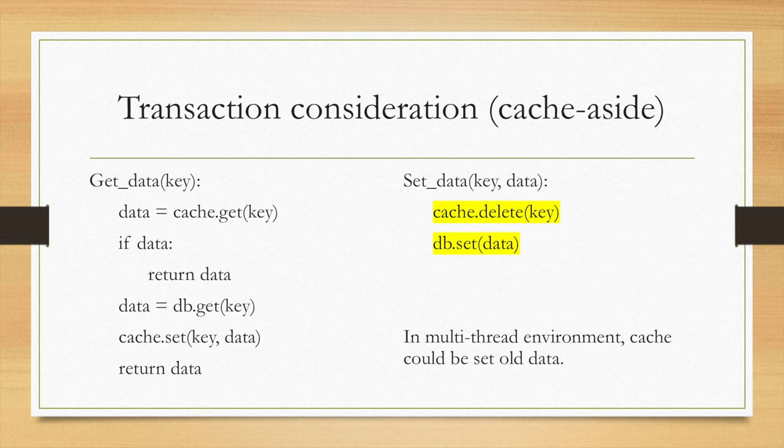For this solution, if in a multi-thread environment, cache could be set to old data. The first thread will call the set and the cache is deleted. And then another thread calls get. Since there's no data in the cache, it will query the database and using that old data, set it into the cache. It means that cache could be set to old data in the multi-thread environment.